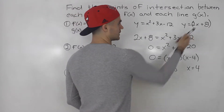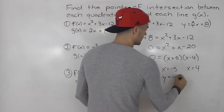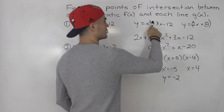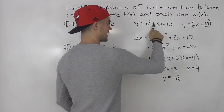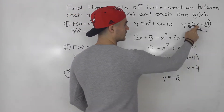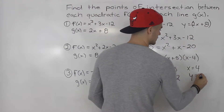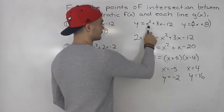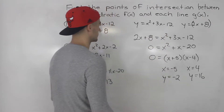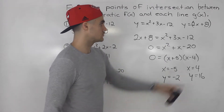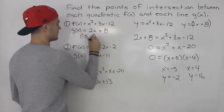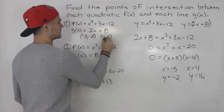Plugging in negative 5 into the line: 2 times negative 5 is negative 10, plus 8 gives us negative 2. Plugging negative 5 into the quadratic: negative 5 squared is 25, minus 15 is 10, minus 12 is negative 2 as well — same y value. Then plugging in 4 into the line: 2 times 4 is 8, plus 8 gives us 16. Plugging 4 into the quadratic: 16 plus 12 is 28, minus 12 gives us 16. So the two points of intersection are negative 5, negative 2 and 4, 16.